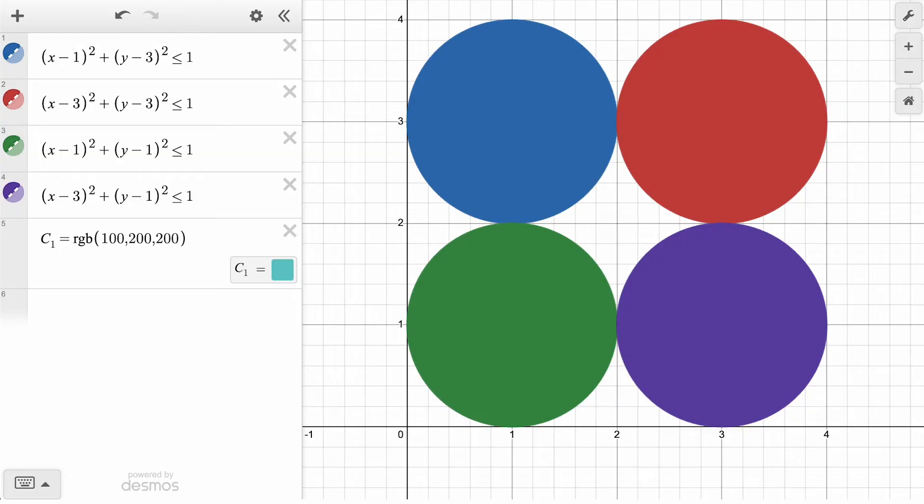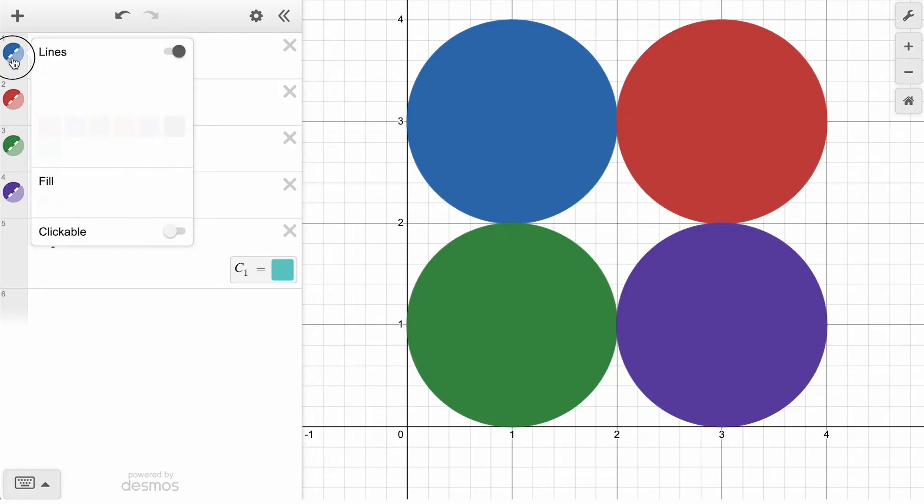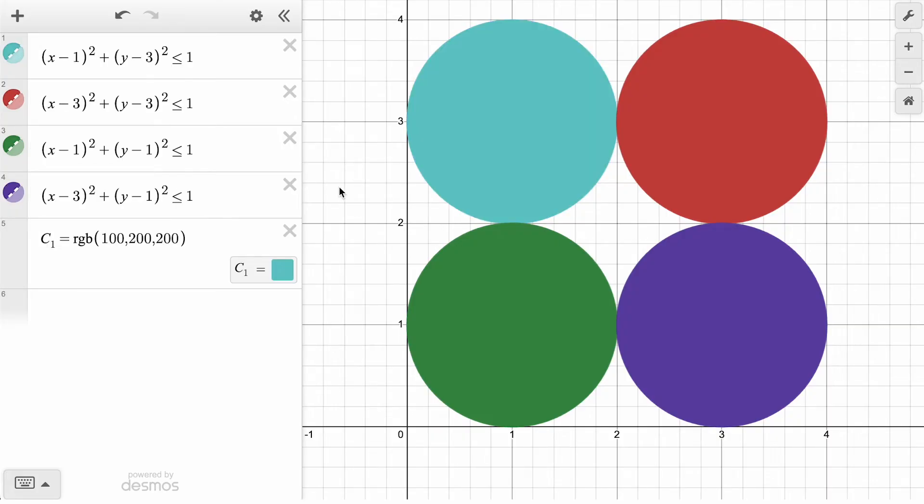For a defined color, a little color swatch appears on the expression line. Now we will go up to our first circle expression, which represents the circle in the top left of our graph, and see how this same color swatch has been added to the list of available colors, which we will select.